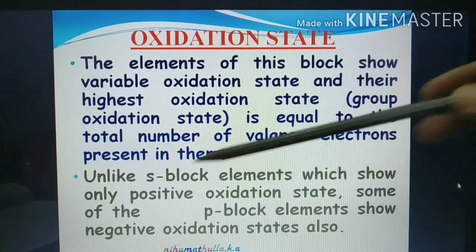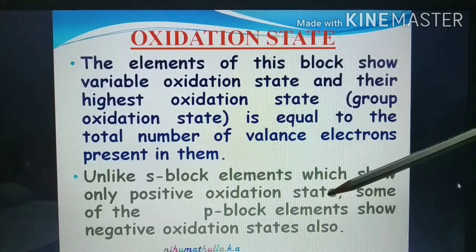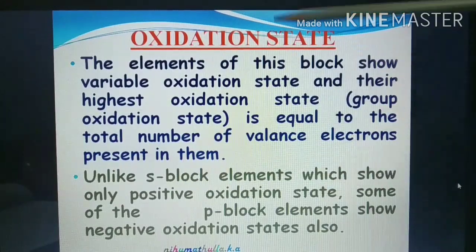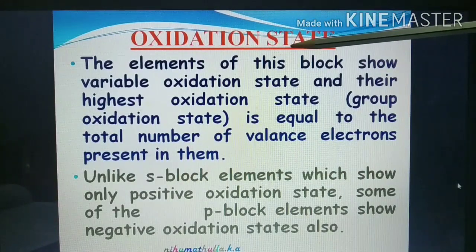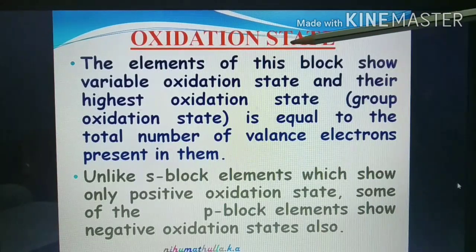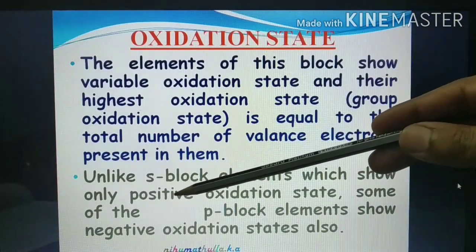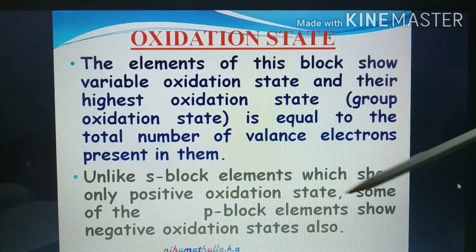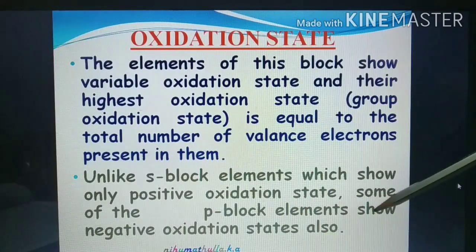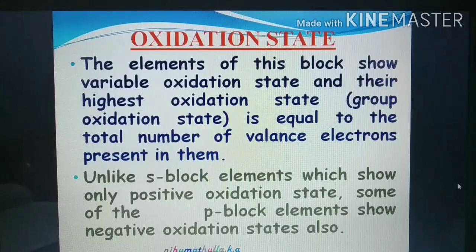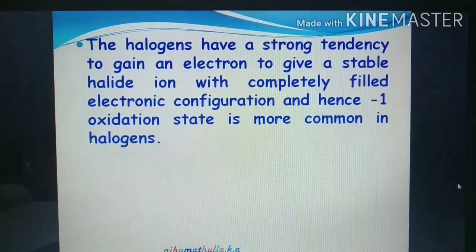Unlike S-Block elements which show only positive oxidation states — because a metal loses electrons giving a positive oxidation state — some of the P-Block elements also show negative oxidation states. When an element gains electrons it has a negative oxidation state; when it loses electrons, a positive oxidation state.